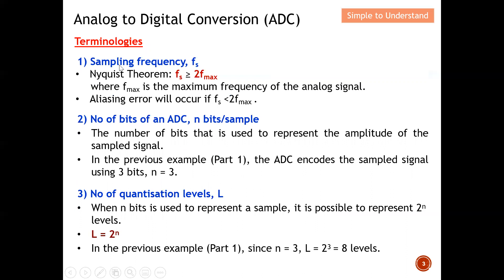Let's do a very quick review of all 6 terminologies. Firstly, sampling frequency, also denoted as FS. Remember, under the Nyquist theorem, the sampling frequency needs to be at least 2 times the maximum frequency. This is the basic minimum requirement. If I want to recover back the original analog signal, the number of samples must be at least 2 times Fmax. If not, an interesting error will actually occur — this is the consequence of not complying with this law.